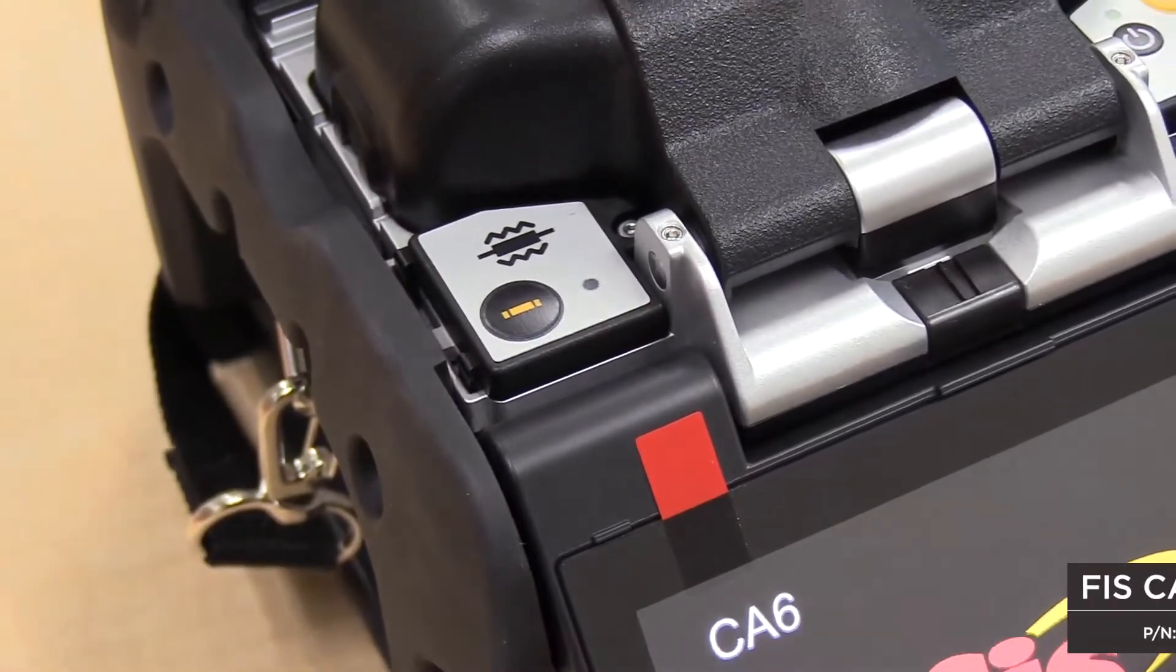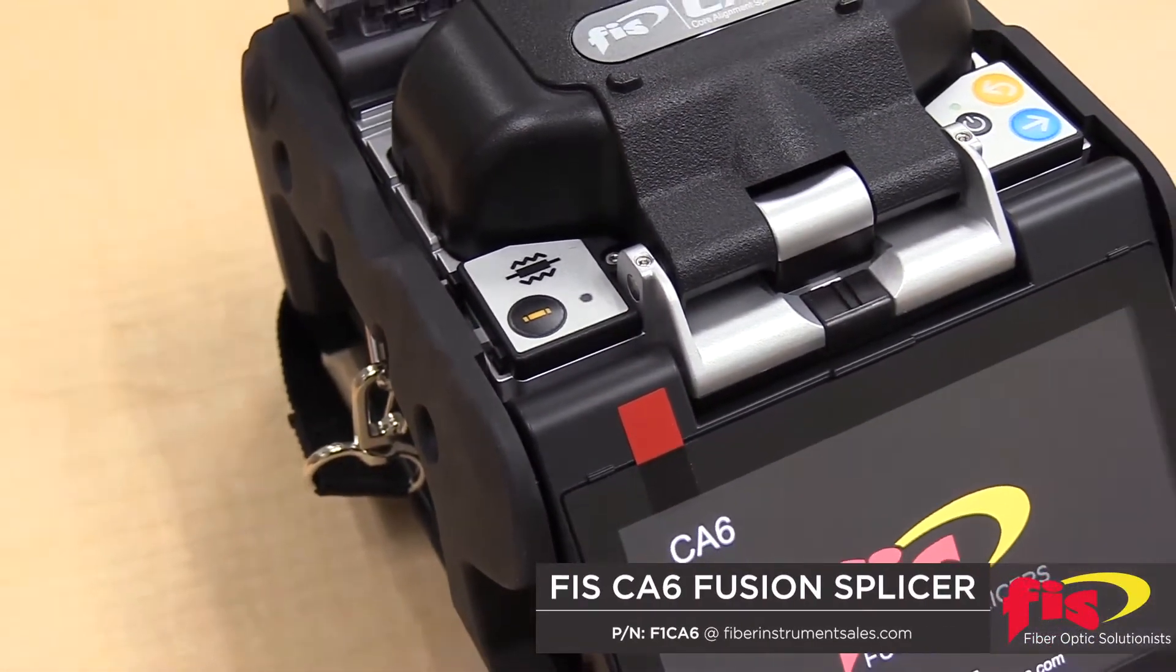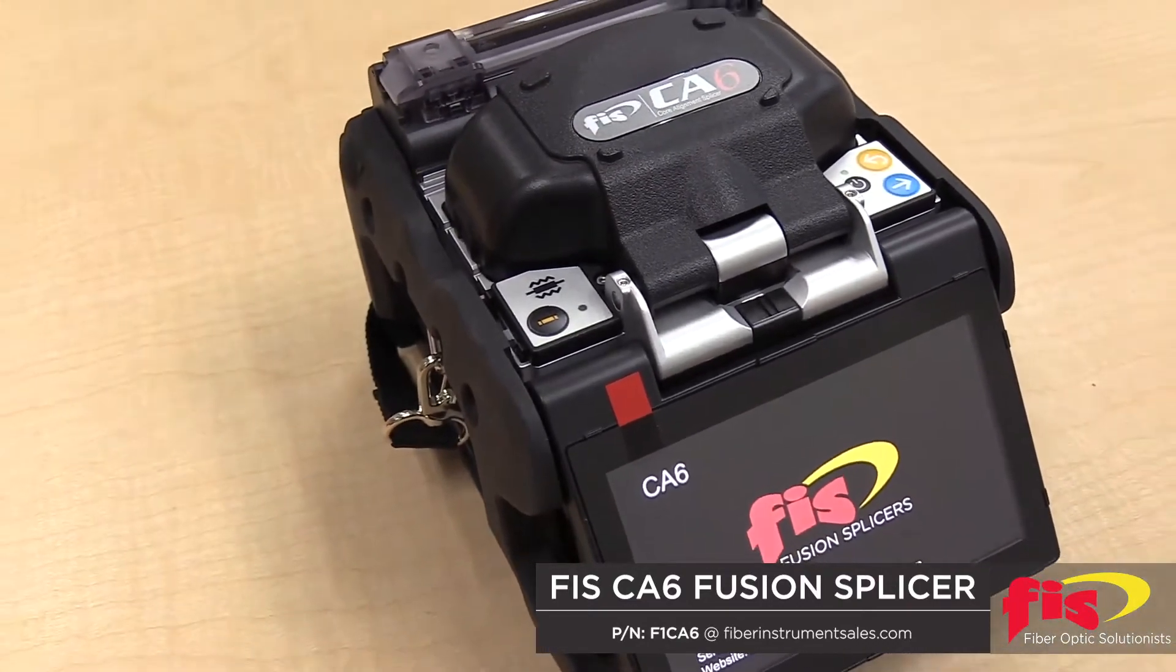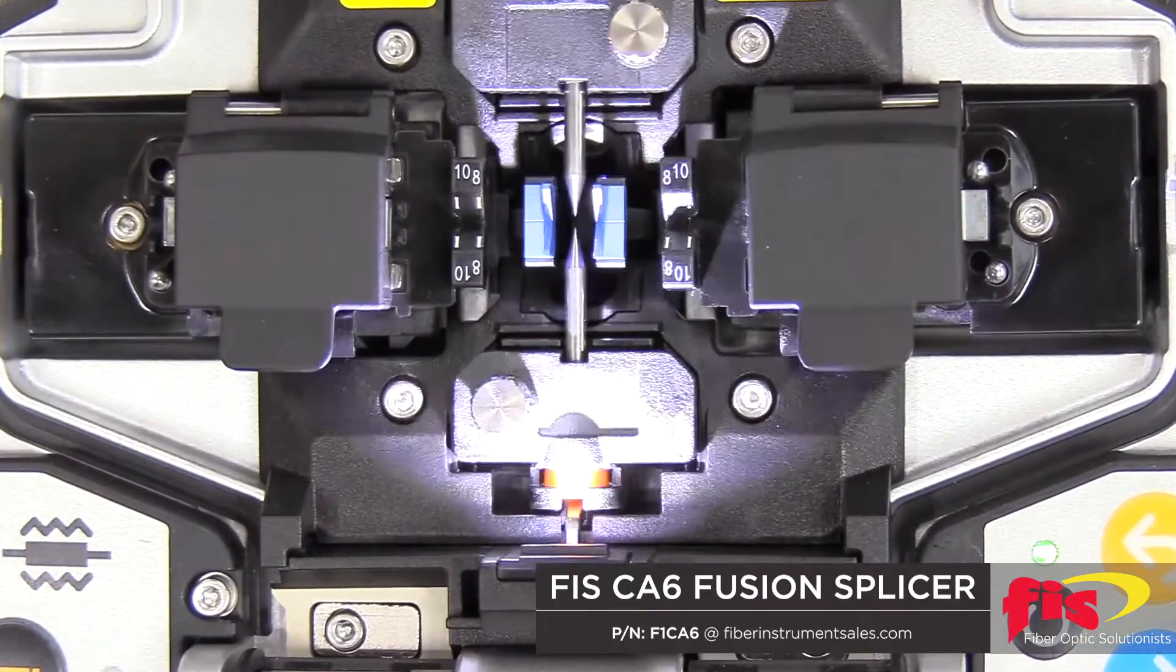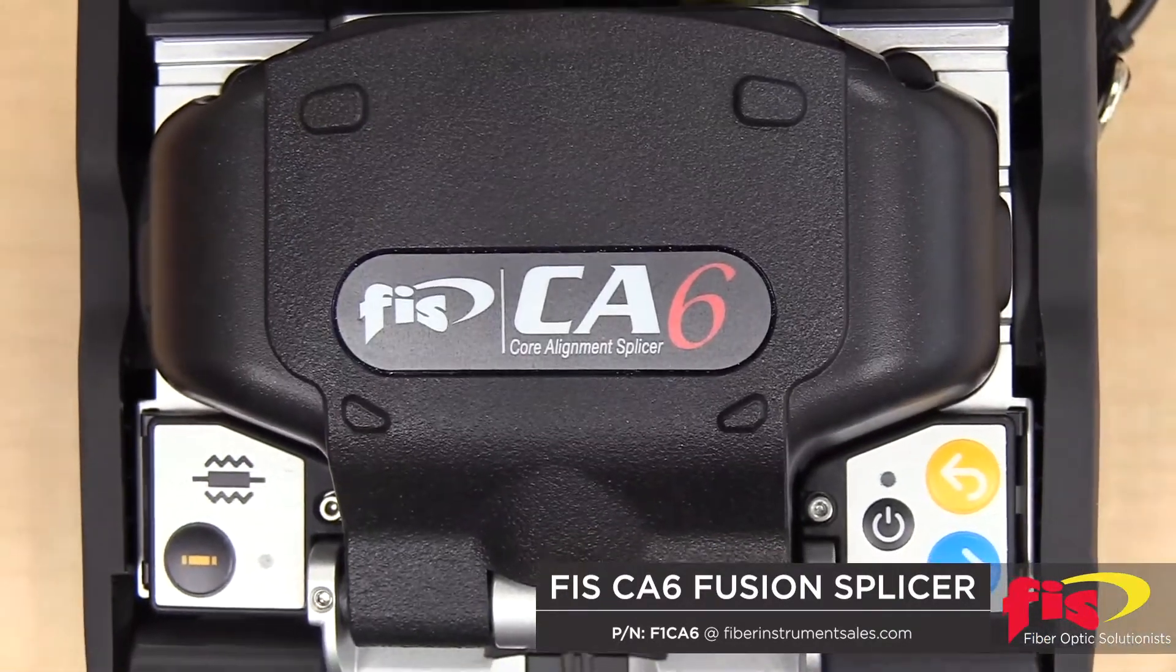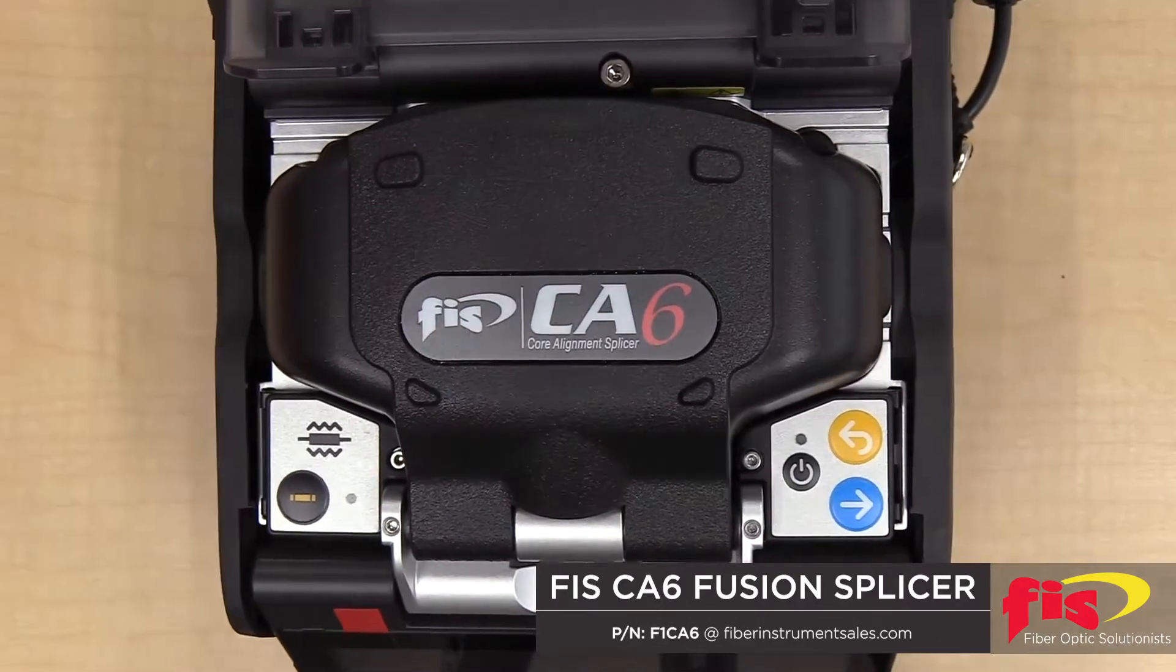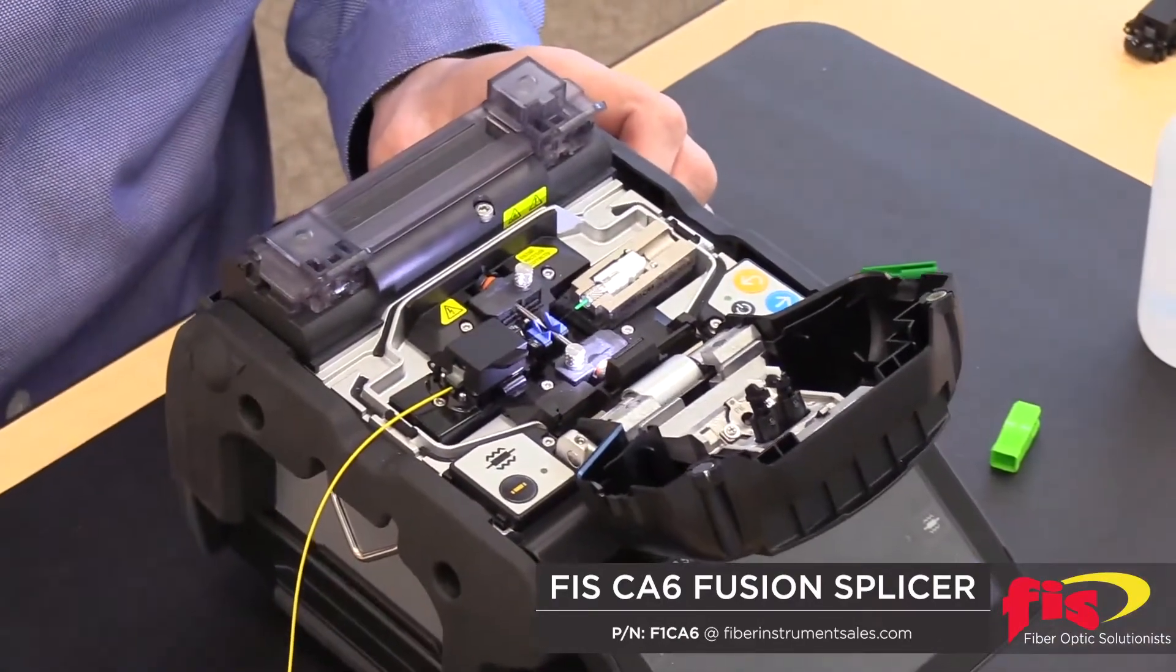The CA6 Core Alignment Fusion Splicer has a 5-inch touchscreen and an easy user interface. With the contractor in mind, the FIS CA6 is compact, lightweight, and fast with a 6-second splice time and a 15-second heat shrink time. The FIS CA6 is an affordable and effective solution for doing fiber-to-fiber splicing, as well as for FIS's line of Cheetah and Armadillo splice-on connectors.